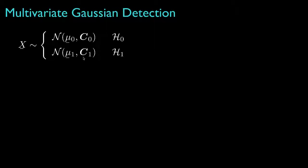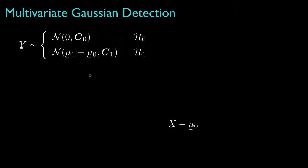Now, in any situation, we can always subtract off the mean for hypothesis 0, which will convert our problem to one in which the mean for hypothesis 0 is now 0, and the mean for hypothesis 1 is the difference between the original means. Subtracting this constant vector doesn't affect the covariances, so the covariances remain the same.